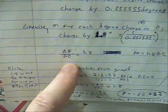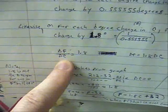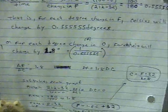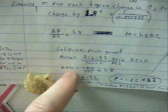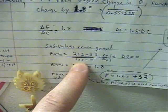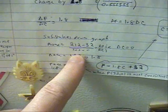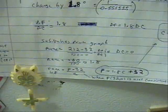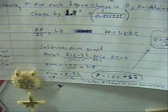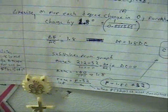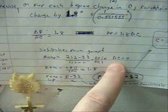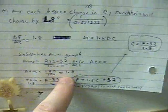So we have the change in Fahrenheit, divided by the change in Celsius, it is 1.8. Substituting values from the graph, we have 212 minus 32 divided by 100 minus 0. That's the change in temperatures, divided by corresponding change in temperatures between the two points, and we get rate is 1.8.